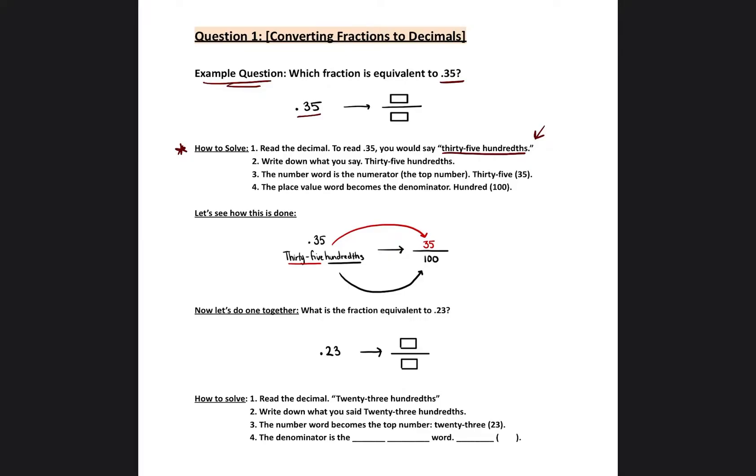And so the number word, so 35 in this example, that will be the numerator. So we will put 35 on top. And then the place value word or the place value showing where that decimal ends is going to be the denominator. So hundredths is going to be the denominator.